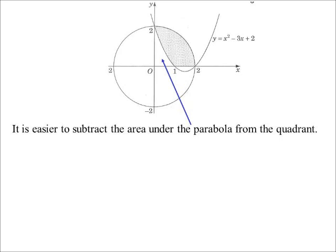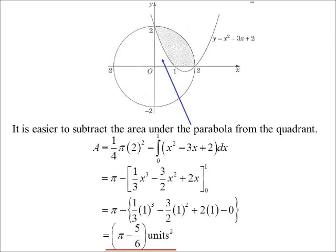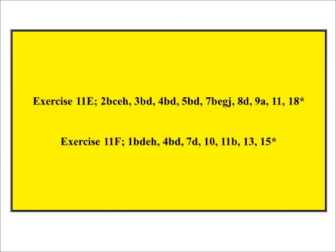A quarter of a circle is a quarter of pi r squared. Then subtract the integral of the parabola — I don't have to rearrange the equation of the circle at all. Add one to the power, divide by the power, and the final answer is pi minus five sixths square units. The key takeaway: if it's a regular shape you already have a formula for, don't waste time integrating — use the formula.